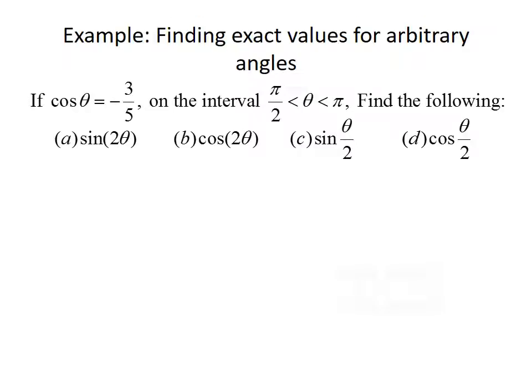We want to find the following values: first, the sine of 2 theta; second, the cosine of 2 theta; third, the sine of theta over 2; and fourth, the cosine of theta over 2.